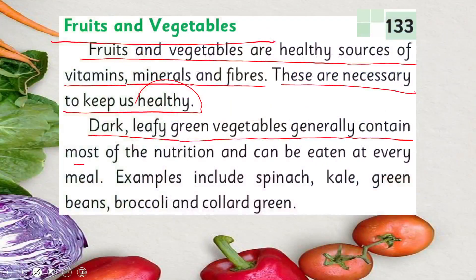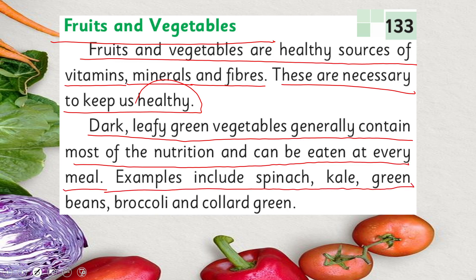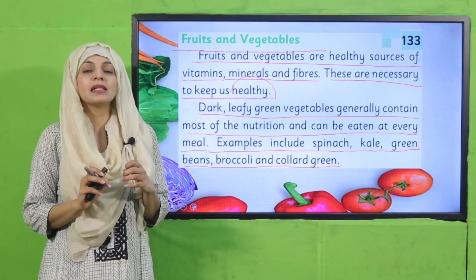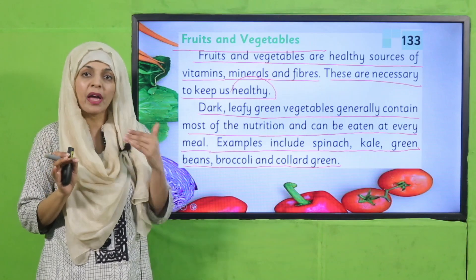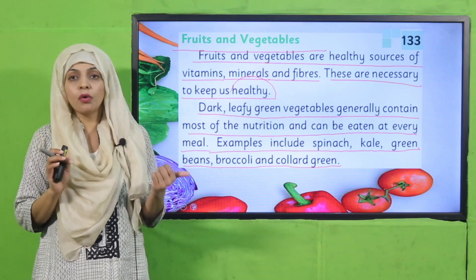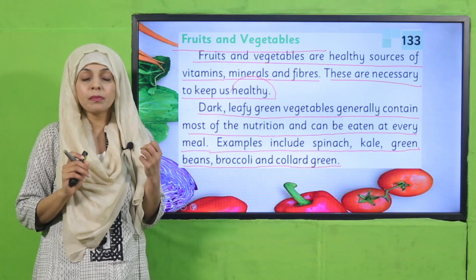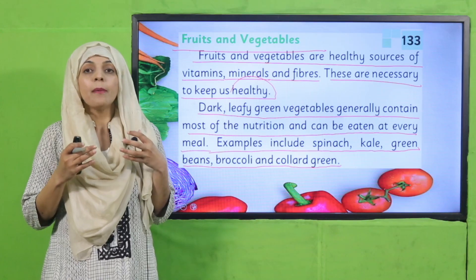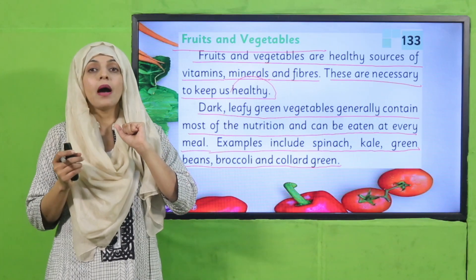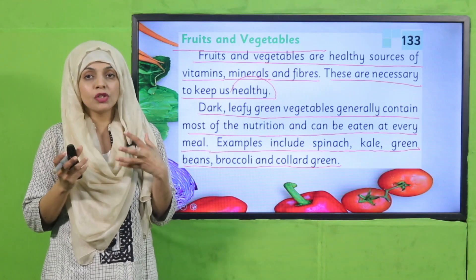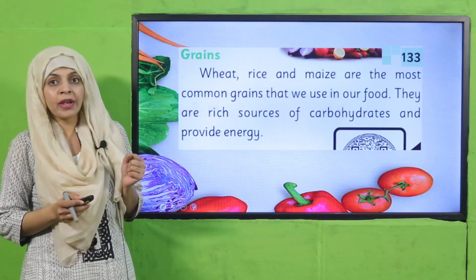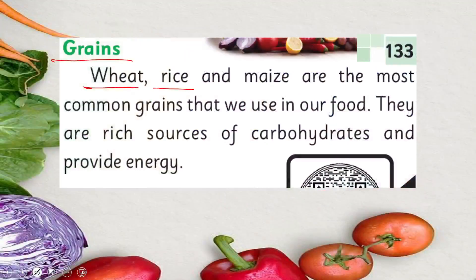Dark leafy green vegetables generally contain most of the nutrition and can be eaten at every meal. Examples include spinach, kale, green beans, broccoli and collard greens. Green leafy vegetables are very rich in different kinds of nutrients — they are the healthiest and you can add them to your every meal. They are very good for your health.